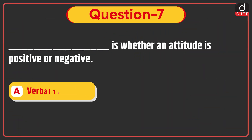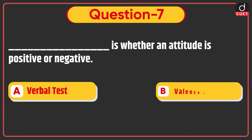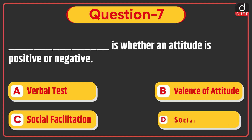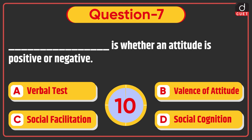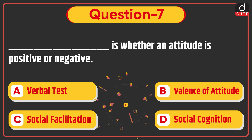Next question: Dash is whether an attitude is positive or negative — Verbal test, Valence of attitude, Social facilitation, or Social cognition. The correct answer is option B, Valence of attitude.